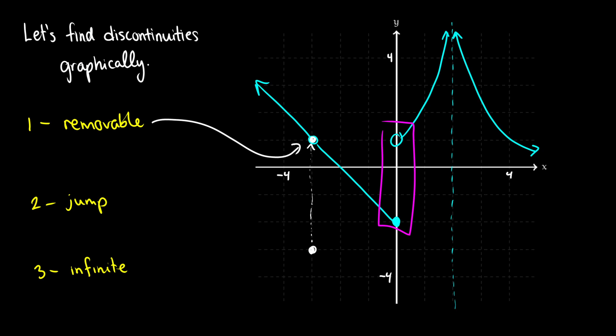The last type is an infinite discontinuity. This happens at any asymptote — for example, at x equals two. The function will never reach any point on x equals two; x equals two is simply not defined. The function will go infinitely upward approaching x equals two, and back down after it, but at x equals two there is no defined point. These are the different types of discontinuities you might see. A continuous function on an interval or at a point will not show any discontinuity.